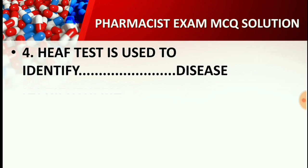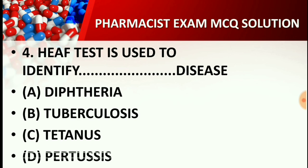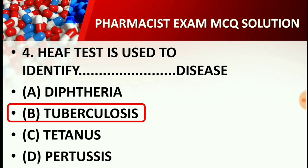Question number four: The Hip test is used to identify which disease? Options are — Option A: Diphtheria, Option B: Tuberculosis, Option C: Tetanus, Option D: Pertussis. The right answer for this question is Option B: Tuberculosis. The Hip test is used to identify tuberculosis.